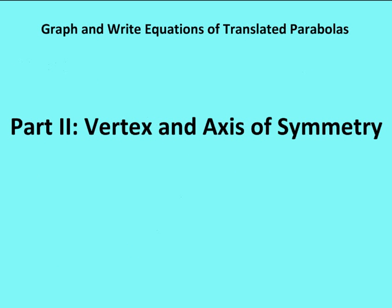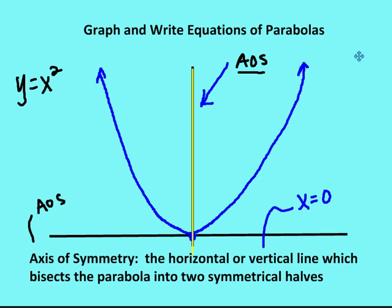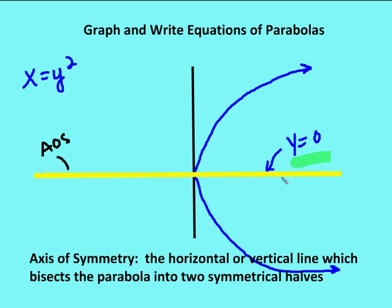Let's talk more about what a parabola is and some of its components. A parabola has an axis of symmetry — that vertical or horizontal line that divides the parabola or bisects it into two symmetrical halves. I call the axis of symmetry AOS. For y equals x squared, the AOS is the vertical axis, which also happens to be the y-axis. For a parabola that opens to the right, the axis of symmetry is a horizontal line — in this case y is equal to 0.